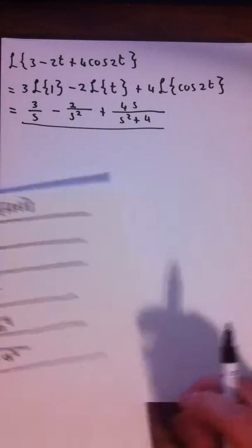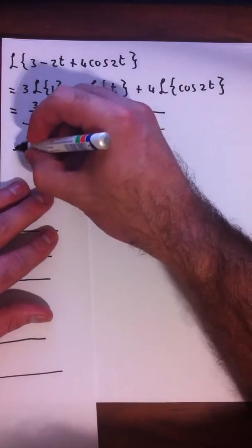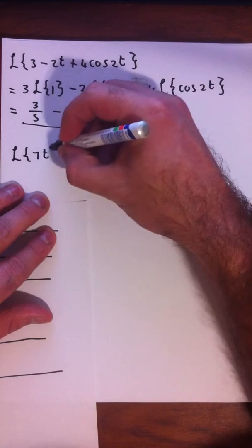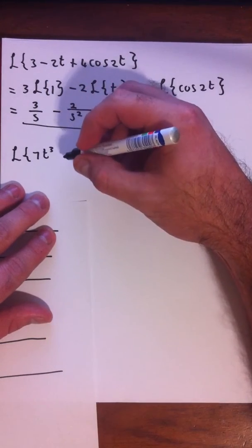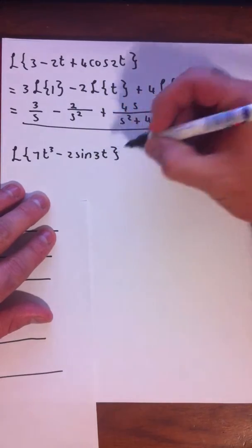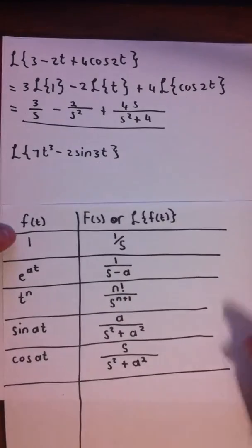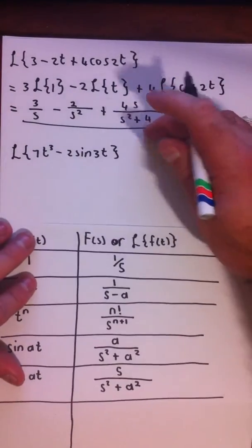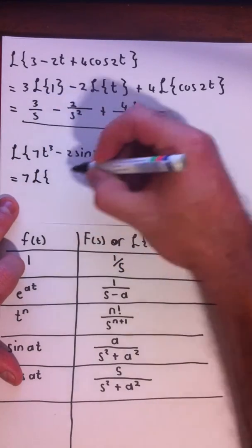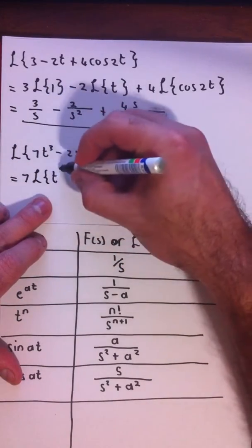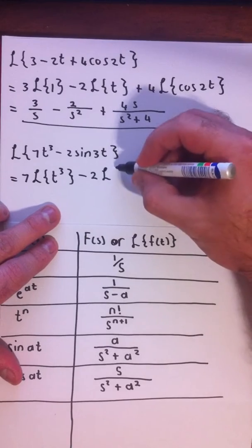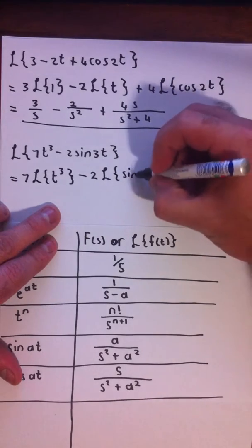Let's try another one: the Laplace transform of 7t³ minus 2sin(3t). Again, this is linear so we can distribute and factor out the constants. That gives us 7 times the Laplace transform of t³, minus 2 times the Laplace transform of sin(3t).